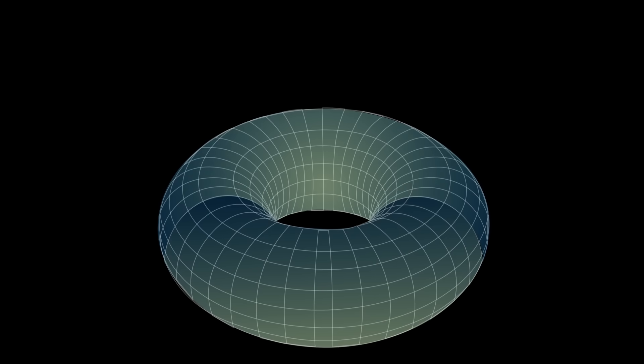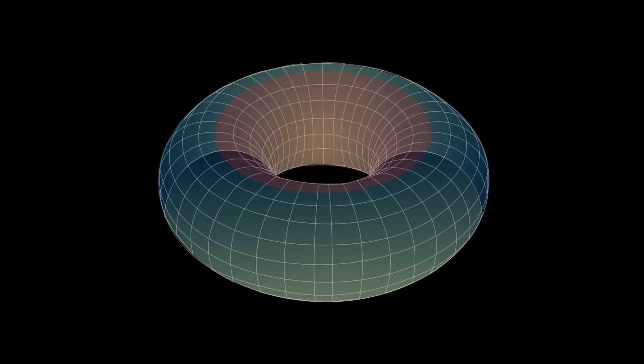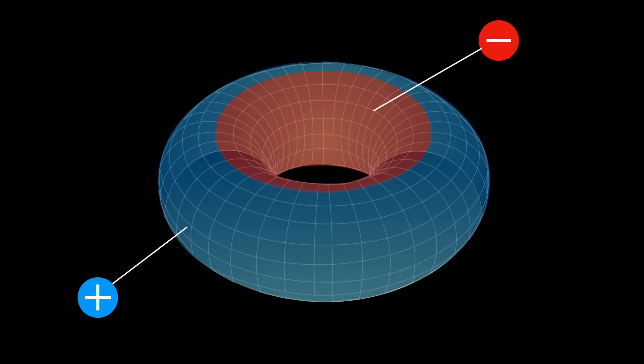So, for example, for points inside of the donut shape, the Gaussian curvature is negative. For points outside, it is positive. And the Gaussian curvature is zero, so the surface is considered flat, only along these lines on top and on the bottom, dividing the outside from the inside regions.